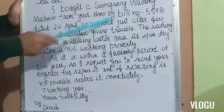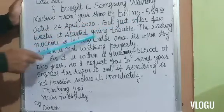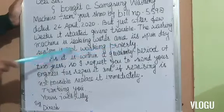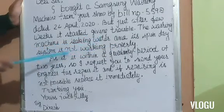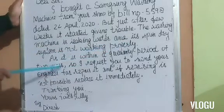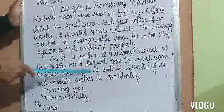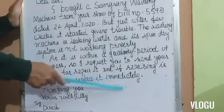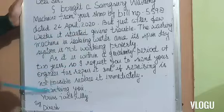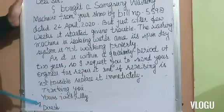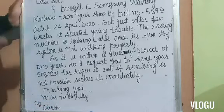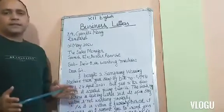I got a Samsung washing machine from your shop — my bill number dated... — but just after a few weeks it started giving trouble. The washing machine is leaking water and the spin dry system is not working properly. As it is within the guarantee period of two years, I request you to send your engineer to repair it, and if repair is not possible, to replace it immediately. Then complimentary close, signature, and the name of the writer — and that is finished. So this is a letter of complaint. Dear students, that is all for now.